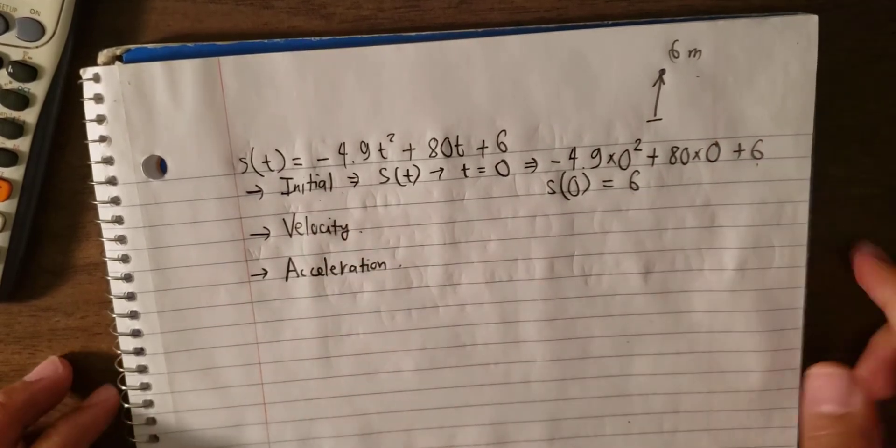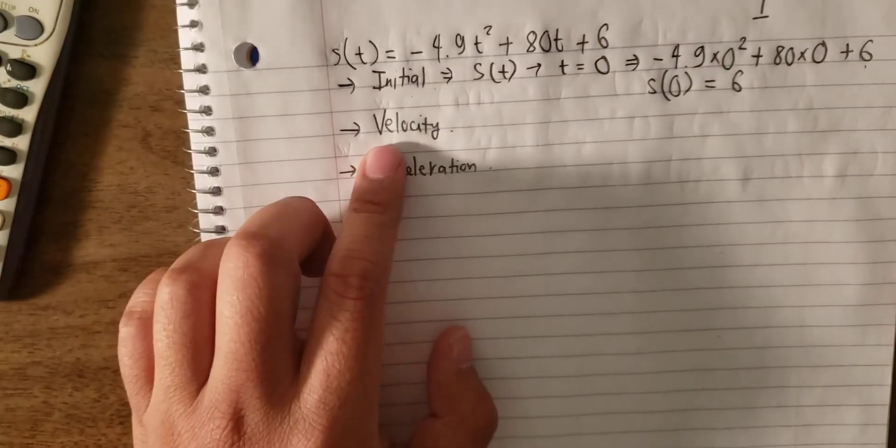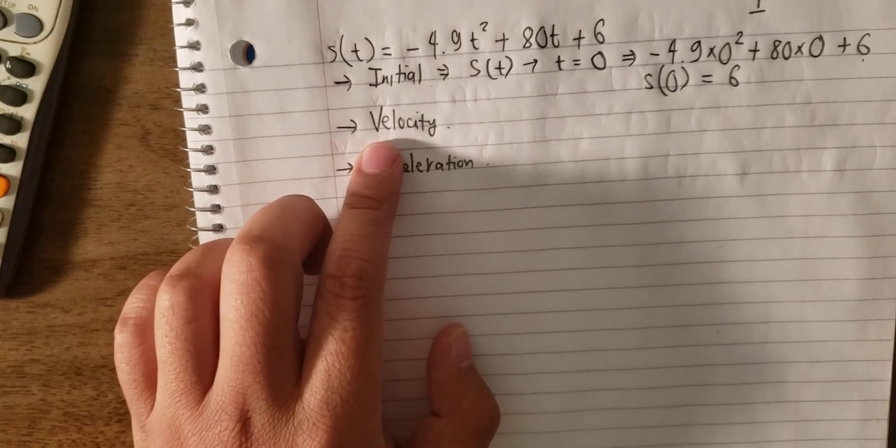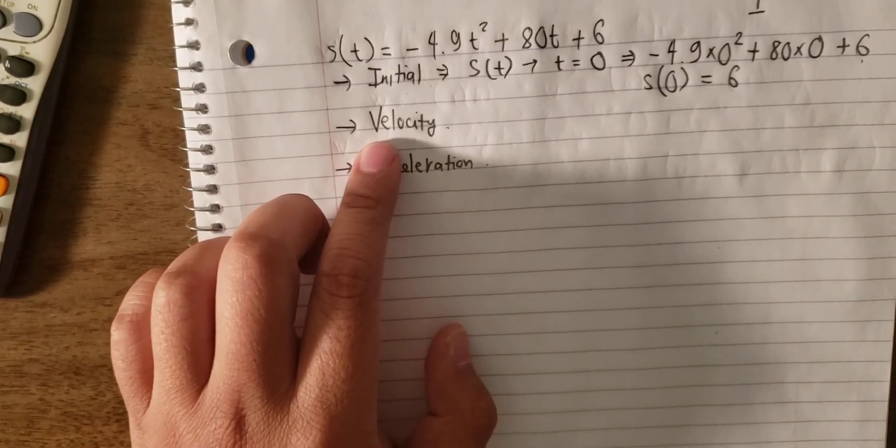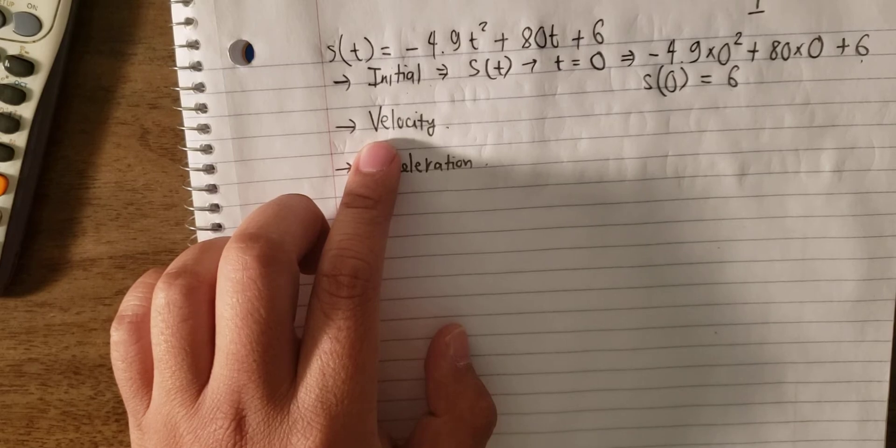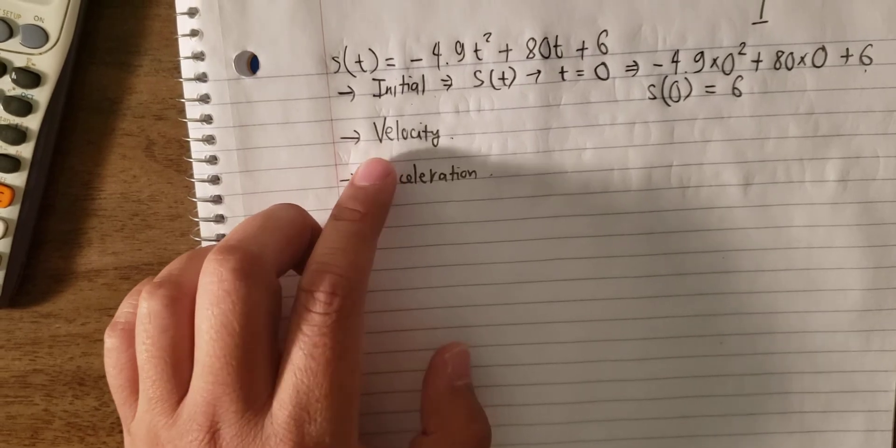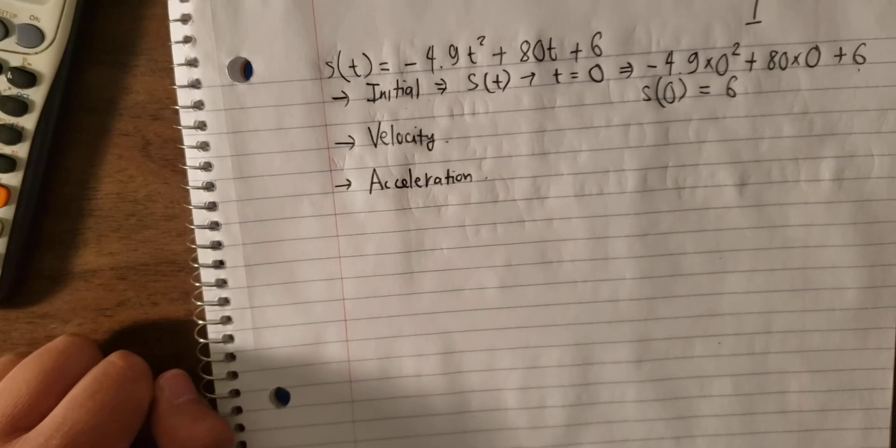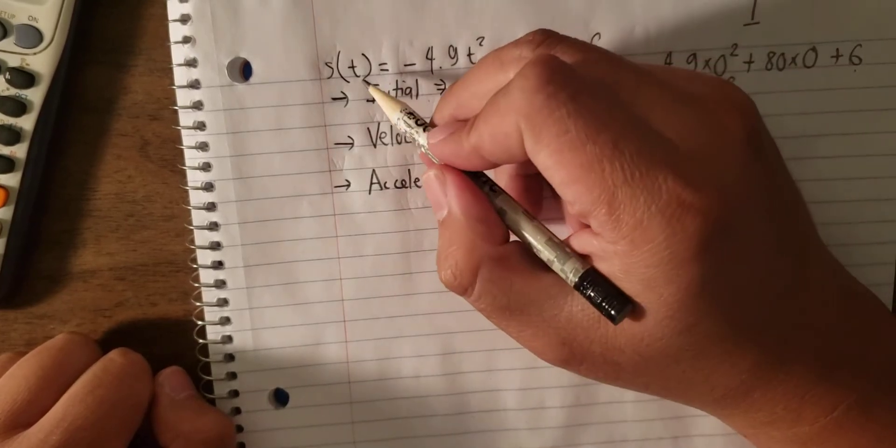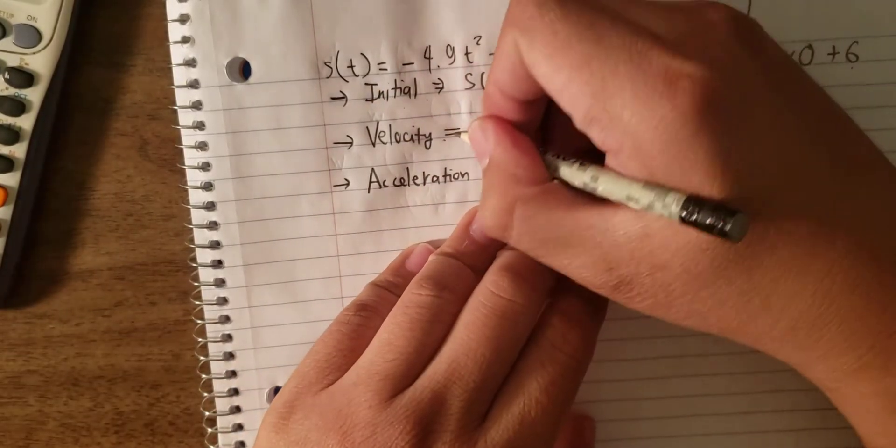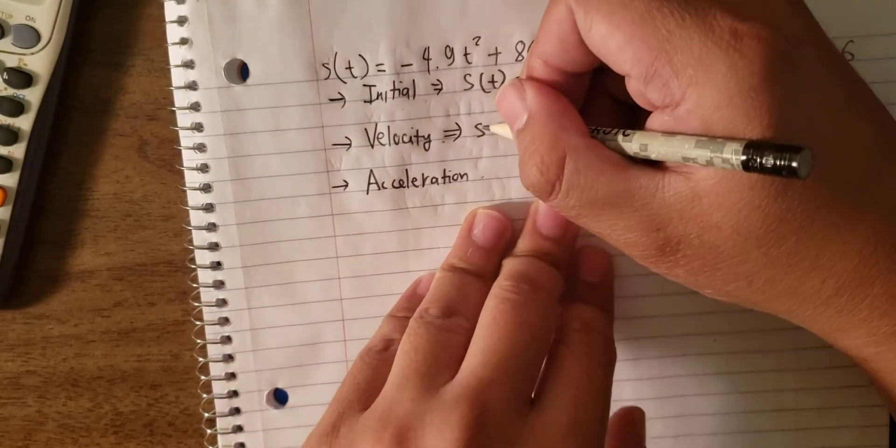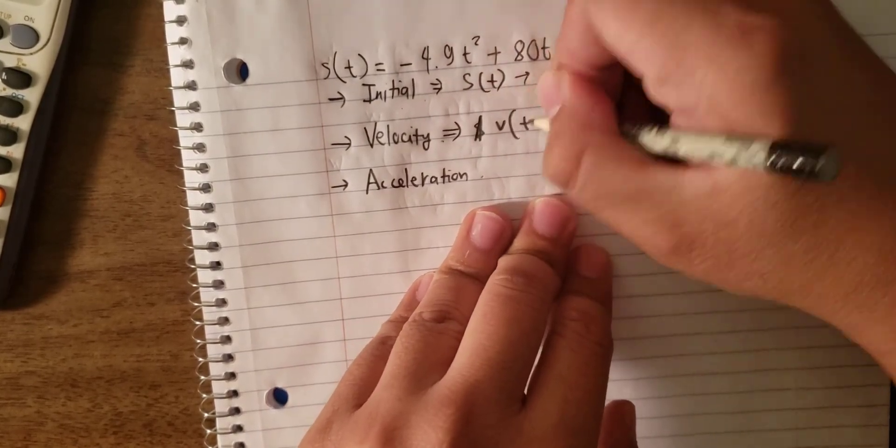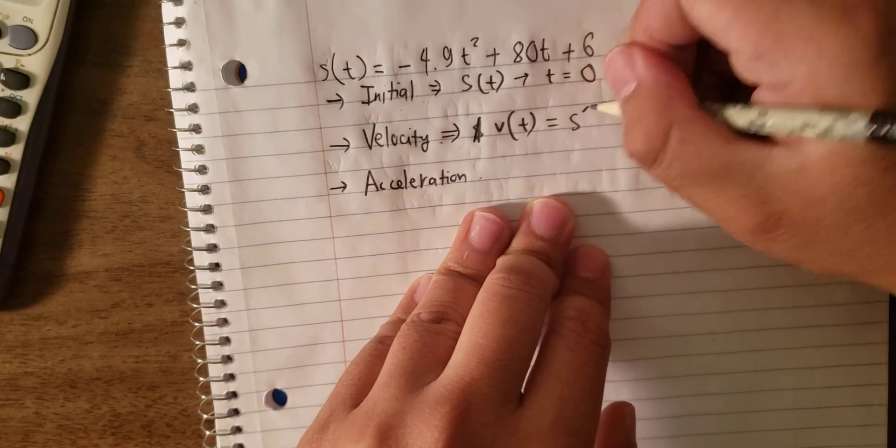The next one is about velocity. Velocity means the different distance divided by different time. If we make the time phase shorter and shorter, that will become the derivative of the distance. So we have the formula of the velocity is the first derivative of the function.